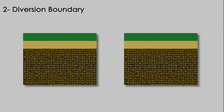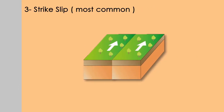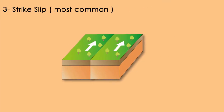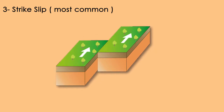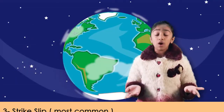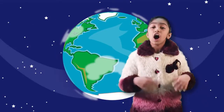The divergent boundary gives place to new ocean floors. The third and last type is called the strike-slip. This is the most common type of earthquake — I'm sure you've heard about them. In this type, the plates slip past each other. This is called strike-slip.